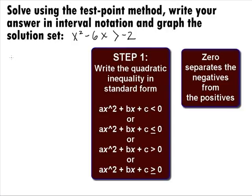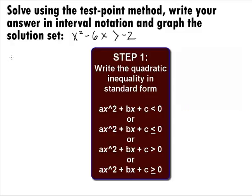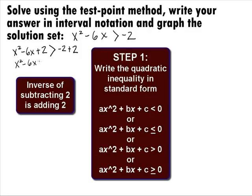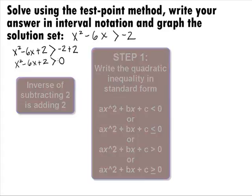With this technique, we will be looking at the sign of a number to determine if it's a solution or not. It looks like we need to add 2 to both sides to get this in standard form. This will give us x squared minus 6x plus 2 is greater than negative 2 plus 2, which simplifies to x squared minus 6x plus 2 is greater than 0.